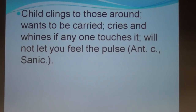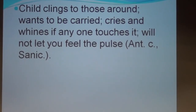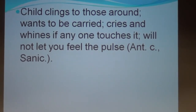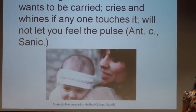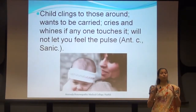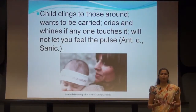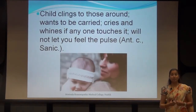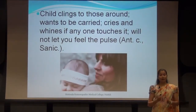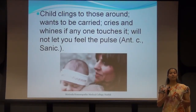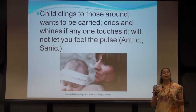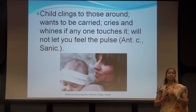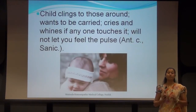The child clings to those around and wants to be carried, but cries and whines if anyone touches it, and will not let you feel the pulse. Other remedies are Antimonium Crudum and Sanicula. This child is already irritable and cannot narrate symptoms. Though the chest is filled with mucus, he is unable to expectorate. That's why he always clings to someone, wanting to be carried, but does not tolerate the approach of any person. As in Antimonium Crudum, the patient is very touchy and doesn't want to be touched because patient needs solitude.